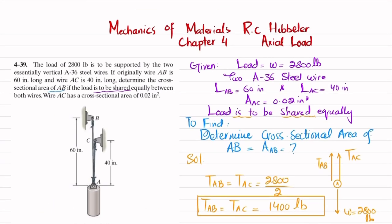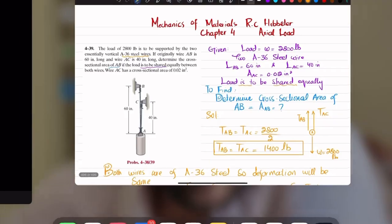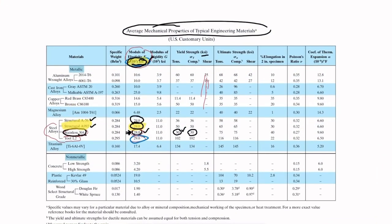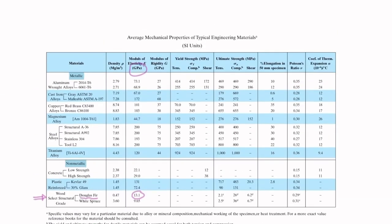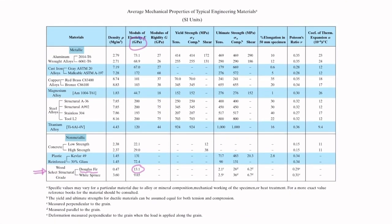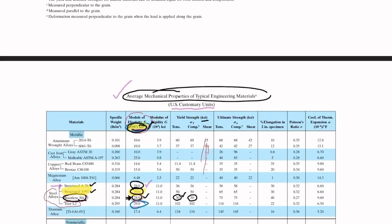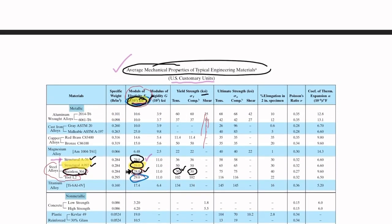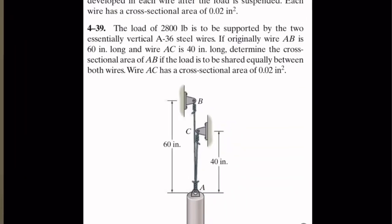We do not know E, but we have been given A36 steel wire. You have to go to the end of the book to the average mechanical properties table and look for A36 structural steel. The value is 29 × 10³ ksi in US customary units. Since we are given data in inches we follow US customary, so E = 29 × 10³ ksi.